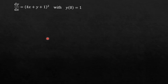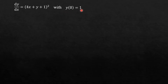Now let us see the next question. Here we have been given a differential equation: dy by dx is equal to (4x plus y plus 1) whole square, with the given condition y(0) is equal to 1. It means when x is 0, the value of y is 1.